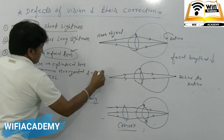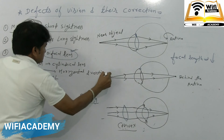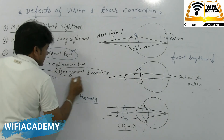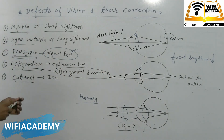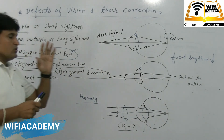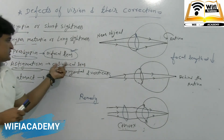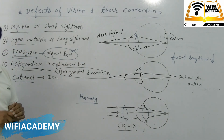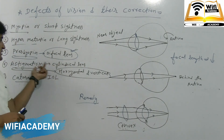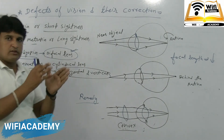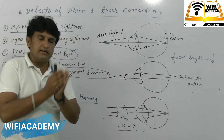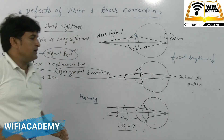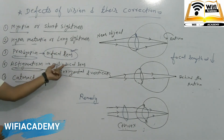In astigmatism, horizontal and vertical lines are not shown clearly at the same time. In this condition, we place a cylindrical lens so that both horizontal and vertical lines appear the same. So for astigmatism, we use a cylindrical lens.